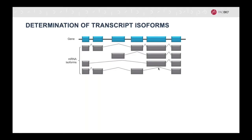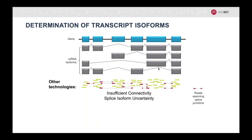On average, a human transcript is about 2 KB in size, and on average, each gene generates about seven different isoforms that are all highly similar to one another. While short reads can give you a count on the gene level to establish gene expression, the short read lengths make it almost impossible to assemble the different isoforms.